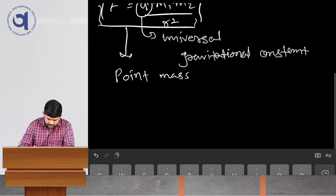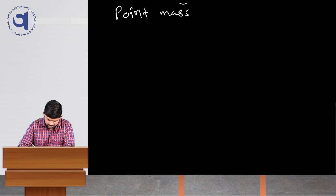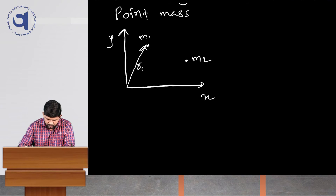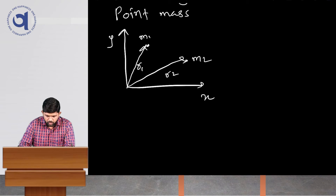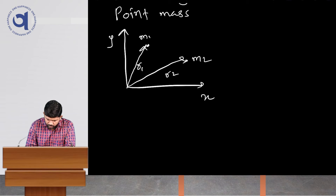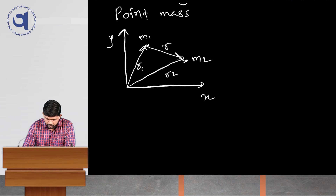For that, let us consider the Cartesian coordinate system. Let me draw the x-axis and y-axis here. Let us place mass M1 at one position and mass M2 at another. This is the position vector R1 of mass M1, and this is the position vector R2 of mass M2. Now we want to find the force on mass M2 due to mass M1, so we draw the position vector of M2 with respect to M1 — an arrow going from M1 to M2 — and call it R.